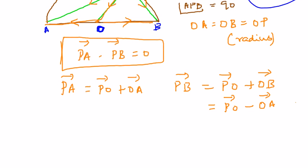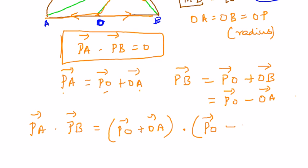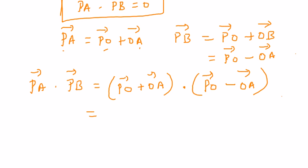Why am I doing this? Because when I do the dot product of PA and PB vector, I want the elements to be the same. So now it will be PO vector plus OA vector dot PO vector negative OA vector. So what happens when you do a dot product of this?